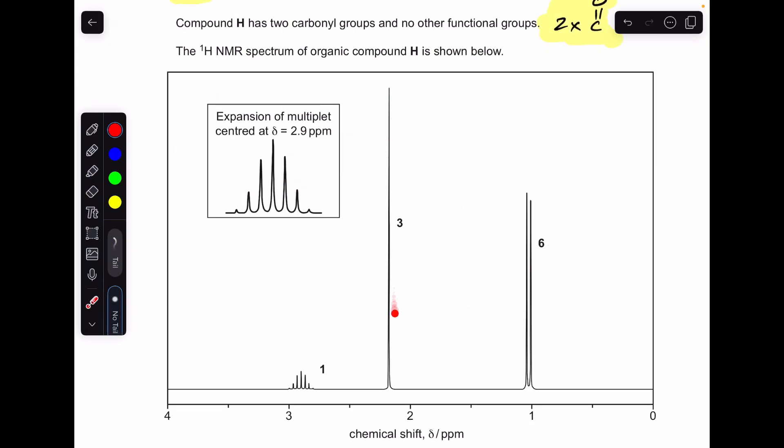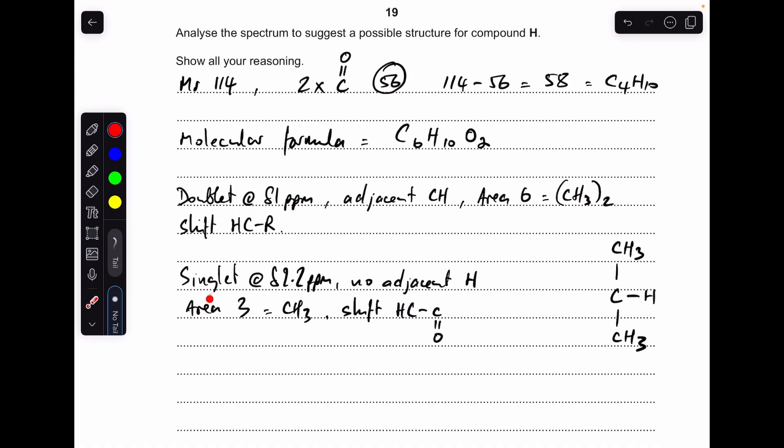Moving on to this signal here. We've got a singlet, which means there's no adjacent hydrogen. The area of three means there's a CH3 group causing this signal. And the shift of just over two, 2.2, is indicative of an H-C-C=O. So there's all that written up. We'll just draw out this part of the molecule. We've got a CH3 that's directly bonded to a C=O.